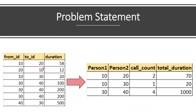If you look at the first two records, the call happened between ID 10 and 20, and 20 to 10. Basically it's the same set of people, so the number of calls would be two between 10 and 20. The first call lasted 58 minutes, the second call 12 minutes, so overall it's 70 minutes. For the second set of people, 10 and 30, we have only one record — number of calls is one and total duration is 20. For 30 and 40, we have four records: the first three are 30 and 40, and the last record is 40 and 30. So the number of calls would be four and total duration would be 1000.